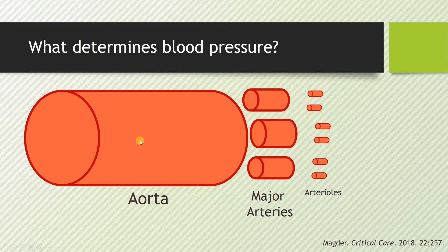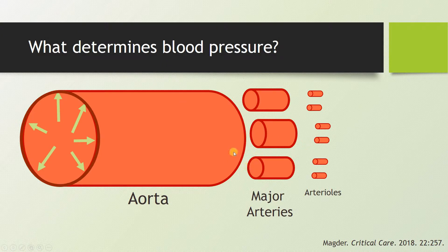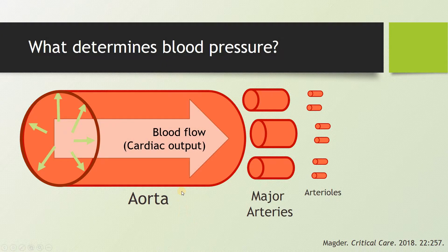What is blood pressure, actually? When we talk about a pressure within a vessel, we're really talking about the force exhibited against the wall of the aorta, but also the major arteries, which is typically where we're checking blood pressure. There are only a few major variables that are most important. The first is your blood flow or your cardiac output — you can liken this to a garden hose: the more you turn up the flow of water, the pressure goes up as well.